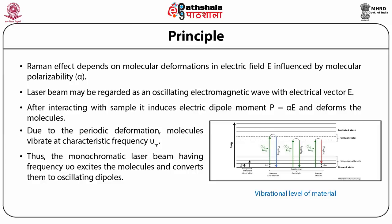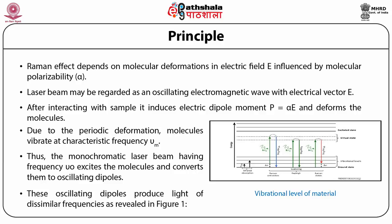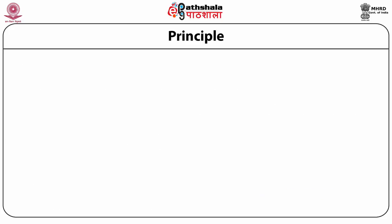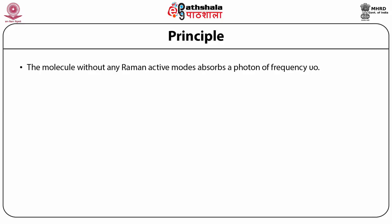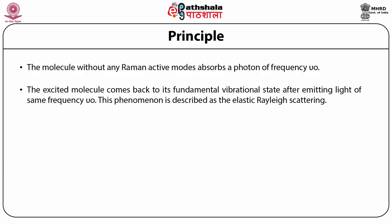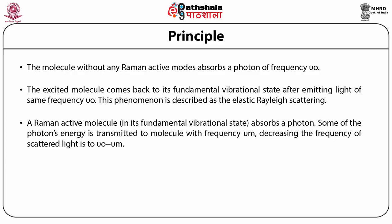These excited molecules are converted to oscillating dipoles, which produce light of dissimilar frequencies, as revealed in Figure 1. Figure 1 shows the vibrational levels of the material. A molecule without any Raman active modes absorbs a photon of frequency nu not and comes back to its fundamental vibrational state after emitting light of the same frequency nu not — this is elastic scattering. A Raman active molecule in its fundamental vibrational state absorbs a photon; some of the photon's energy is transmitted to the molecule with frequency nu m, decreasing the frequency of scattered light.